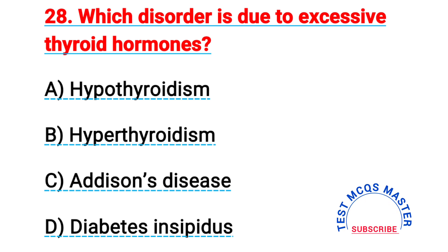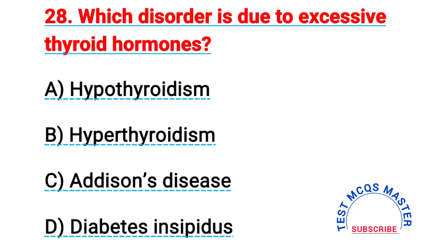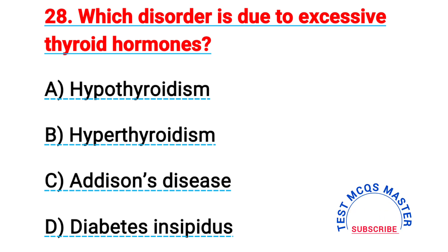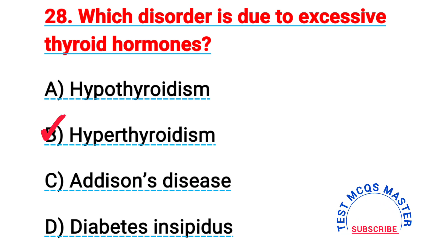Question number twenty-eight: which disorder is due to excessive thyroid hormones? The right answer is B, hyperthyroidism.